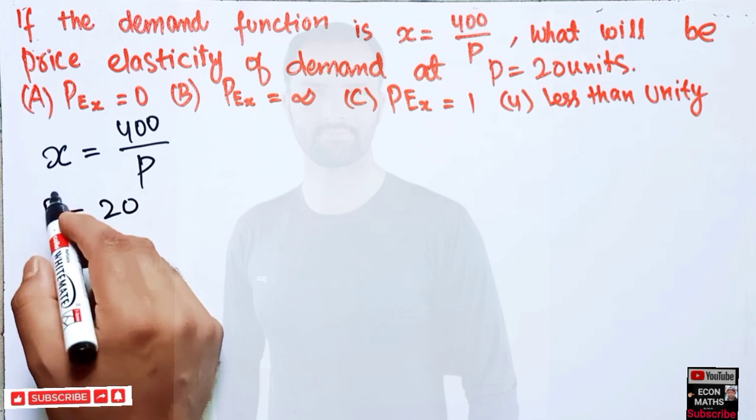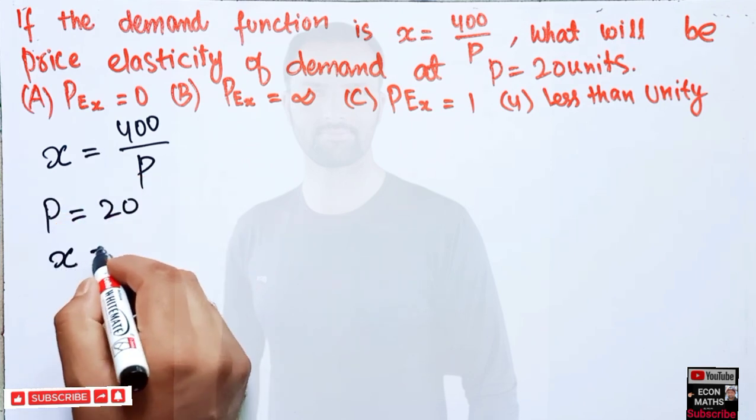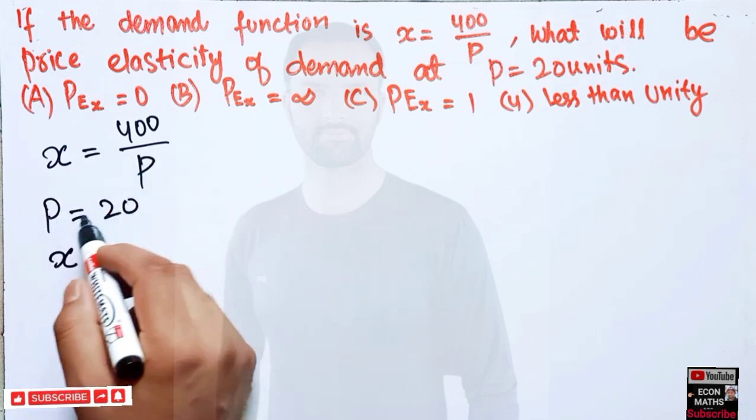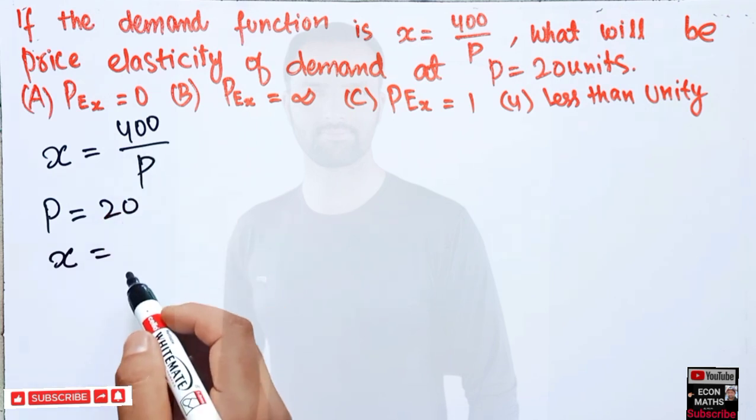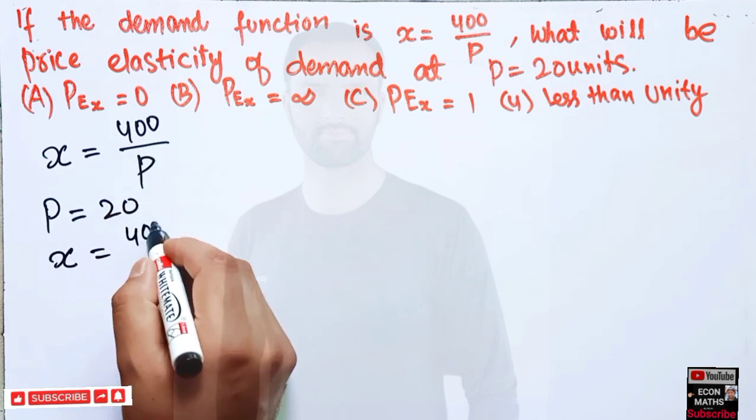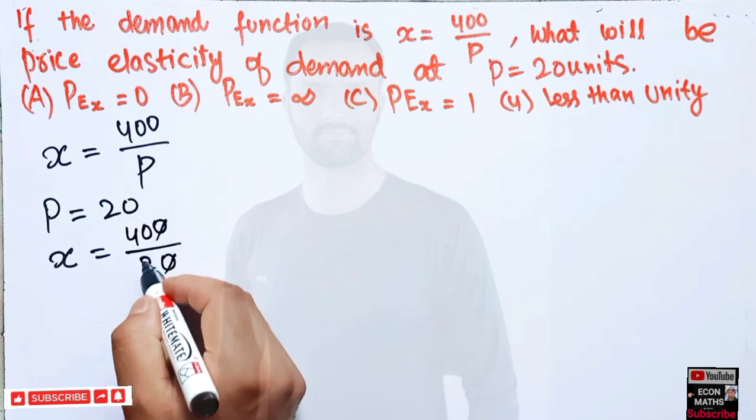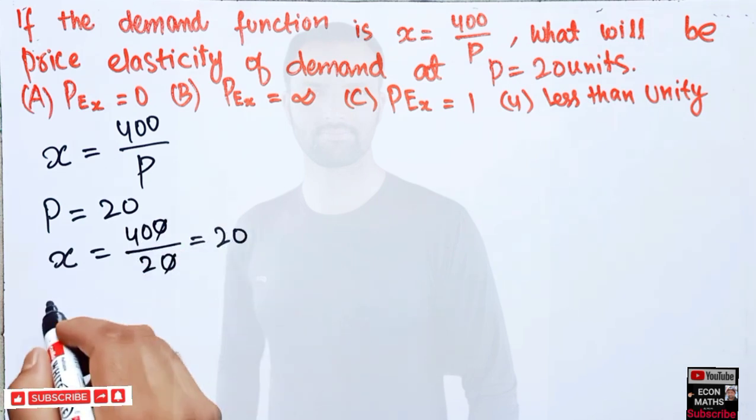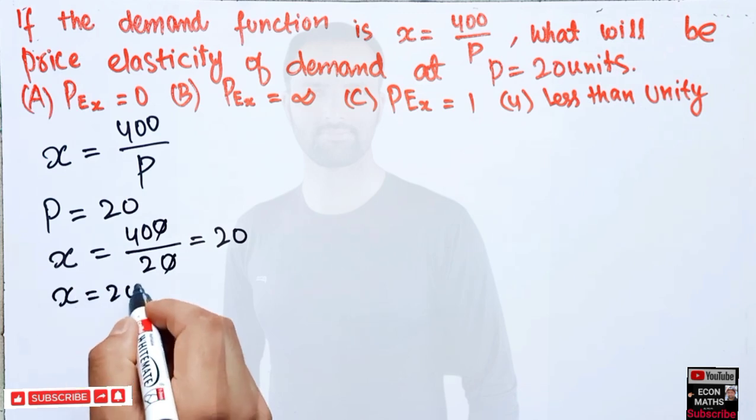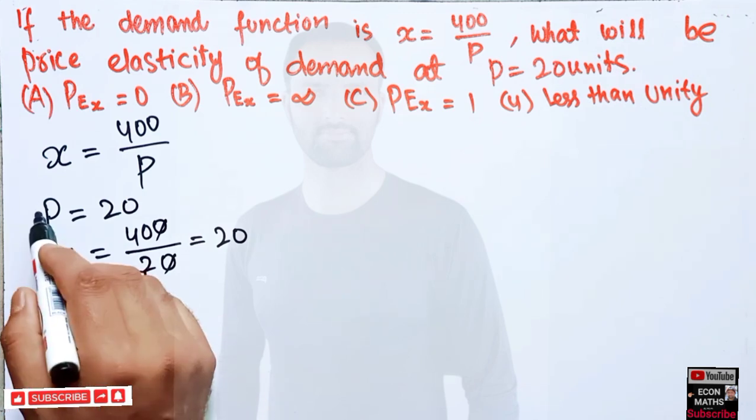Price is given as 20, so what will be x? The value of x—we just plug p into this demand function, so we get the value of x. So in place of p, we have 20. This will get cancelled. So x is equal to 20. We got these two things here.